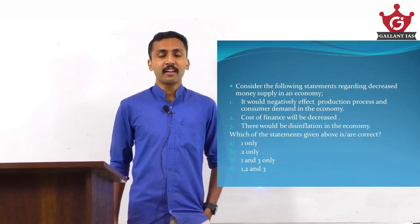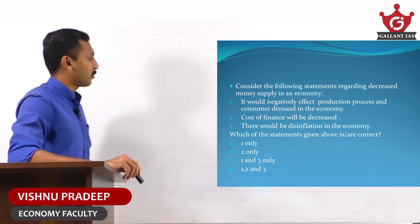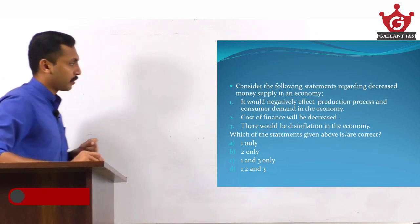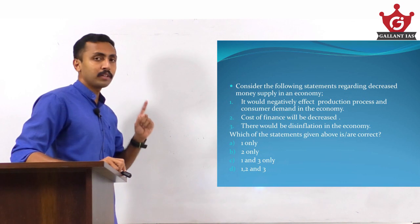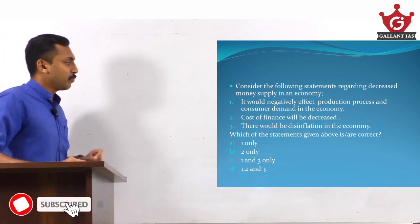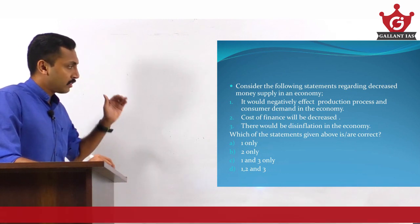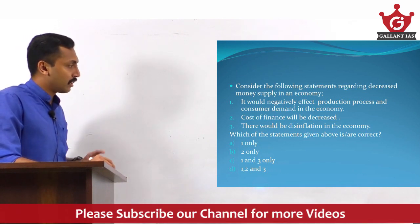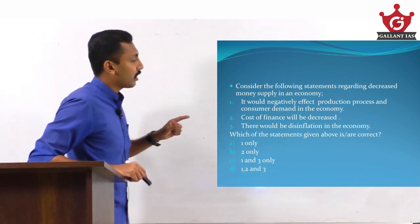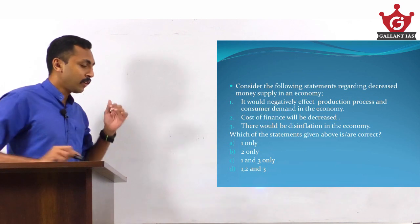Welcome to Gallant IAS 120 plus. Today's question is from economy. Consider the following statements regarding decreased money supply in an economy. First statement: it would negatively affect production process and consumer demand in the economy. Second statement: cost of finance will be decreased. Third: there would be disinflation in the economy. Which of the following statements is/are correct? This is a three-statement question and you can apply the elimination method.